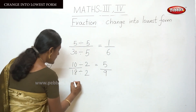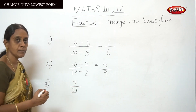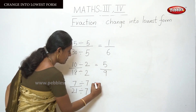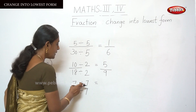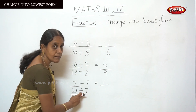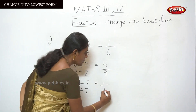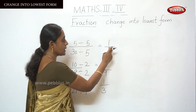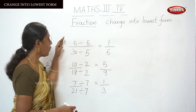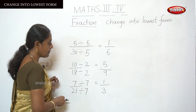One more sum: 7 by 21. You have to use the 7 times table. Divide by 7, and the denominator also divided by 7 with the same divisor. Say the 7 table: 1 seven is 7, and up to 21 — 3 sevens are 21. So the answer is 1 by 3. The lowest forms are 1 by 6, 5 by 9, and 1 by 3 for the fractions 5 by 30, 10 by 18, and 7 by 21 respectively.